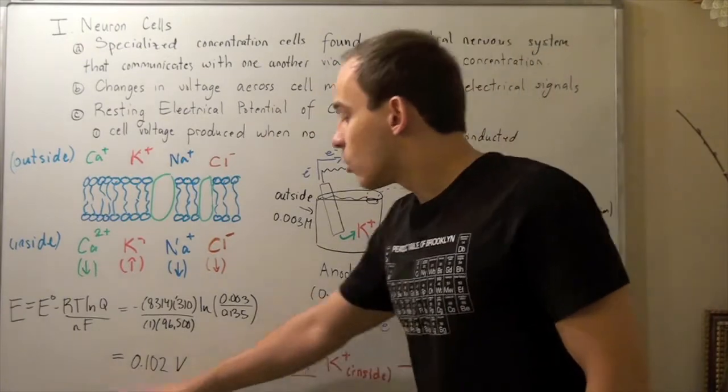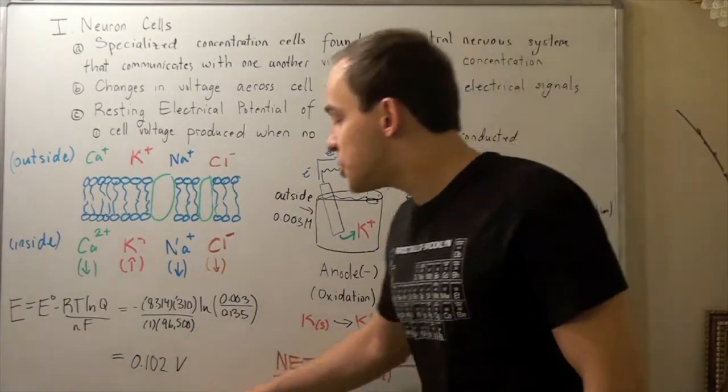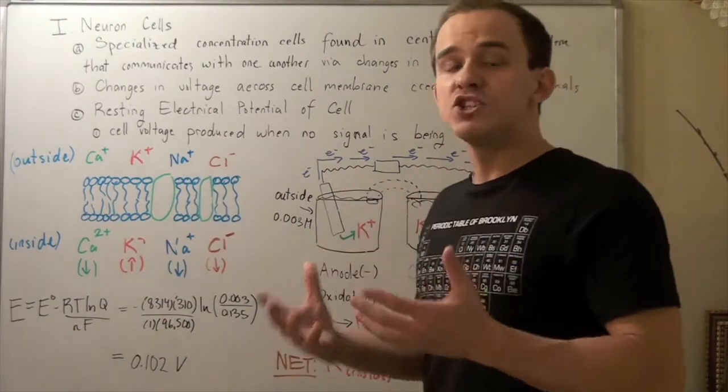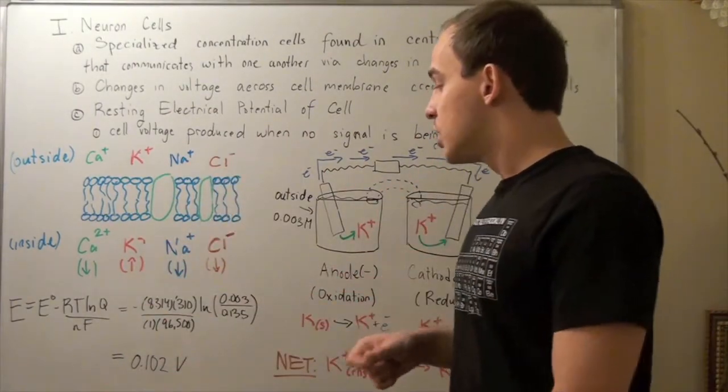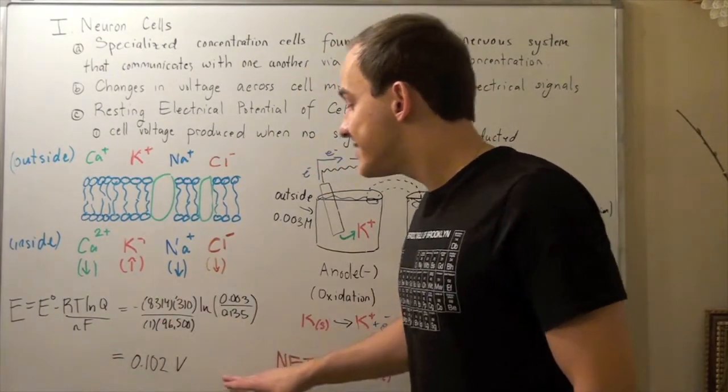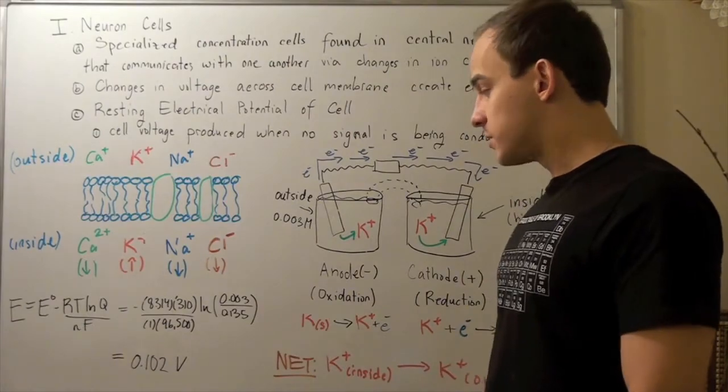So actually, our electrical potential should be negative of this because they're opposite of each other. They have the same magnitude but different signs. So our electrical potential for potassium is negative 0.102 volts.